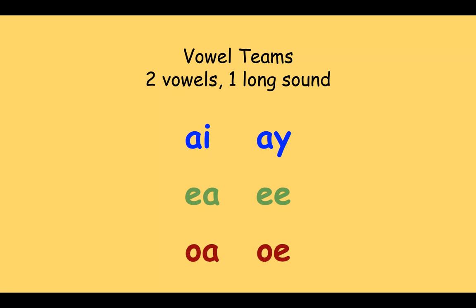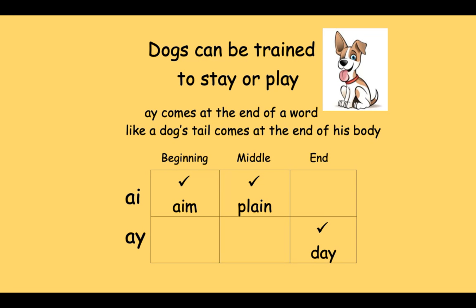When I hear A in a word, I've got to decide which vowel team to use: AI or AY. I've got a funny little saying for you: dogs can be trained to stay or play.